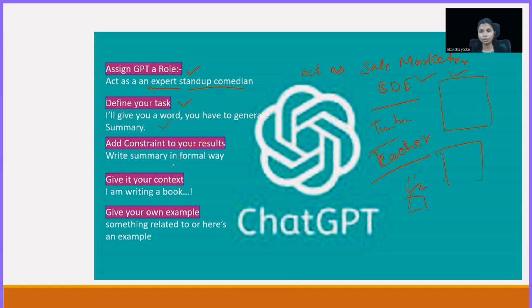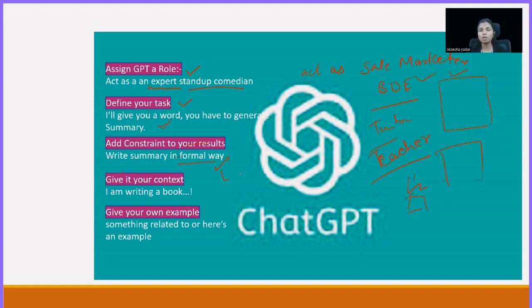After defining your task, you have to add constraints to your results — in what way do you want it to generate? Is it going to be formal? Suppose I am a beginner learning a programming language. You can give a prompt: 'act as a coding mentor and start by explaining me the basics of Python.' Then add the constraint: 'I am a beginner, explain me in simple words.' You can also specify a time frame like 'I have 30 days' to help focus the response.